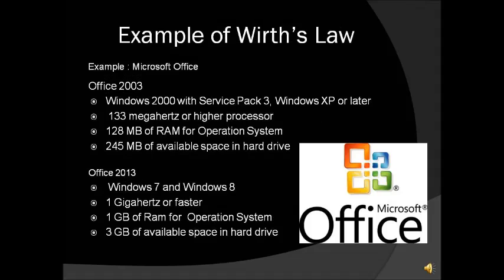An example would be Microsoft Office — Office 2003 and the latest Office 2013. Office 2003 requires 133 megahertz or higher, 128 megabytes of RAM, and 245 megabytes of available hard drive space. While Office 2013 requires 1 gigahertz or faster, 1 gigabyte of RAM, and 3 gigabytes of available hard drive space. As you can see, Office 2013 requires more processing power, RAM, and hard drive space than Office 2003.